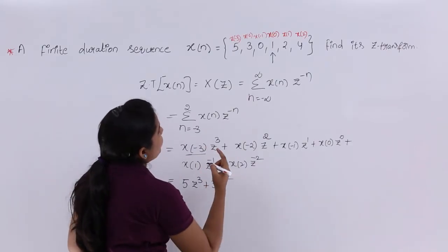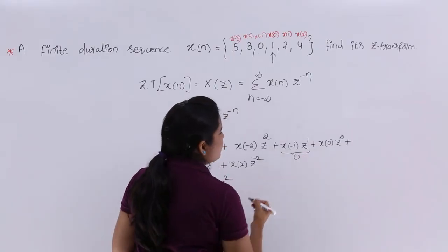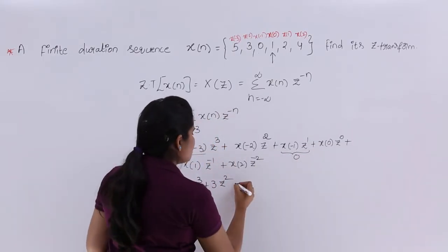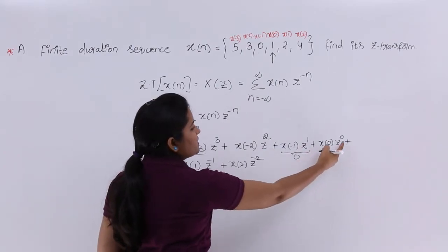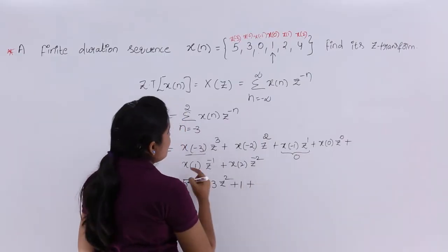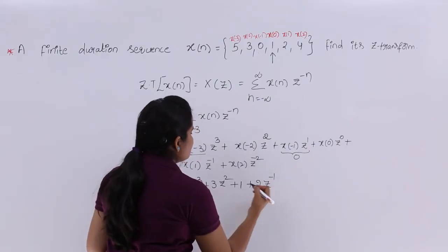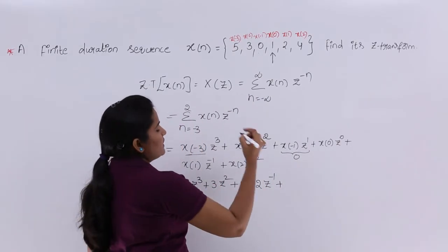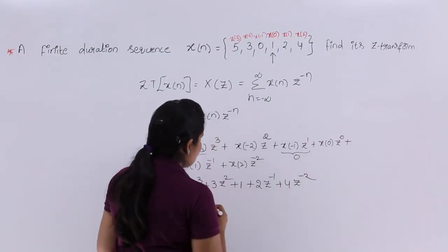X of minus 1 value is 0, so that term equals 0. X of 0 value is 1, and Z power 0 equals 1, so 1 times 1 gives 1. X of 1 value is 2, giving 2Z inverse. X of 2 value is 4, giving 4Z power minus 2.